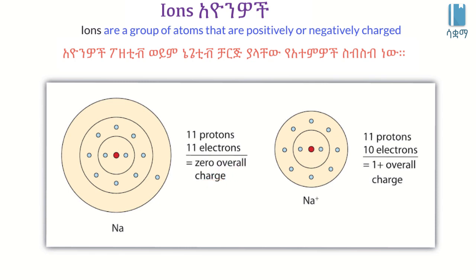When an atom is charged with valence electrons, the overall charge of the atom becomes non-zero. Its proton is the proton and the electron is the proton — this determines the charge.